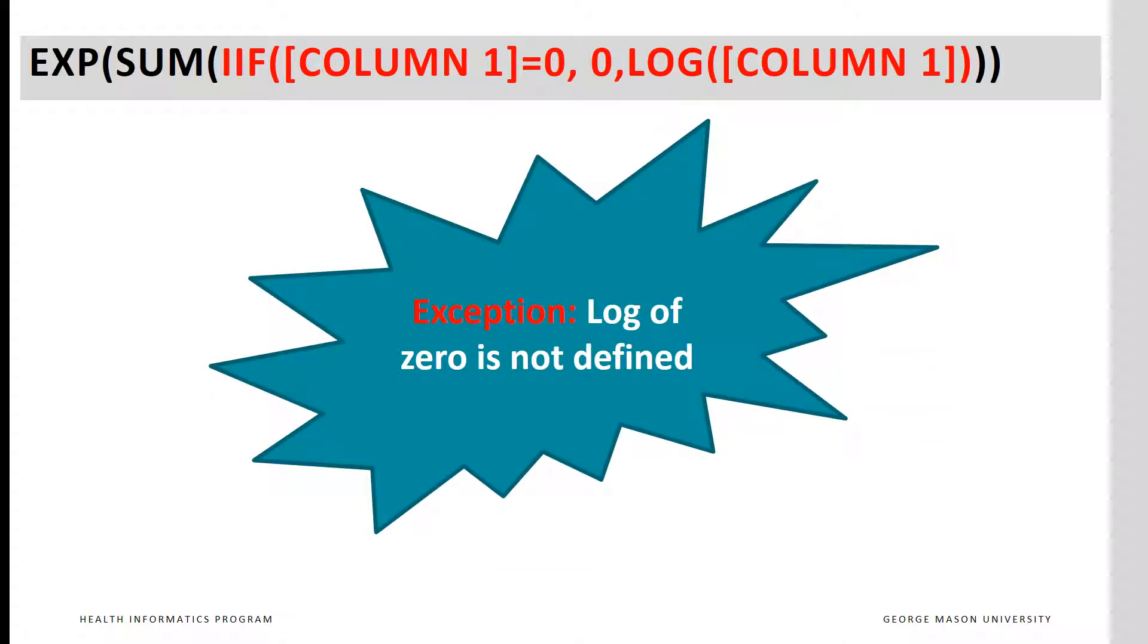There are two exceptions to this method. First, log of 0 is not defined. So we have to calculate situations where there is a 0 in the column using a different method. We know when the column contains a 0, the product of all the values in the column will be 0. So we insert that with an if statement into the code. Here we are saying if column 1 equals 0, then enter for the sum the value 0. Otherwise, look at sum over the log of column 1.